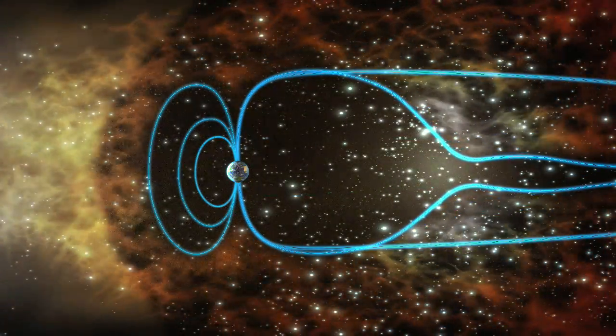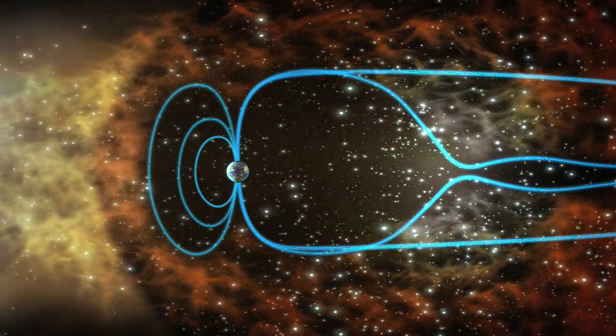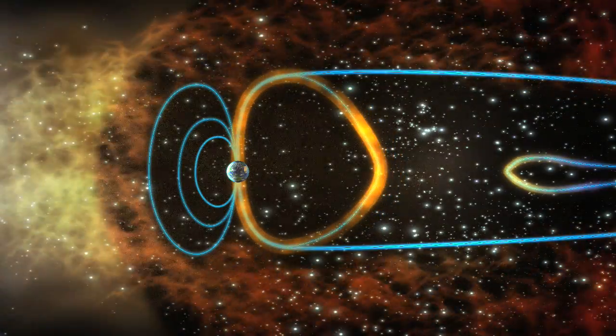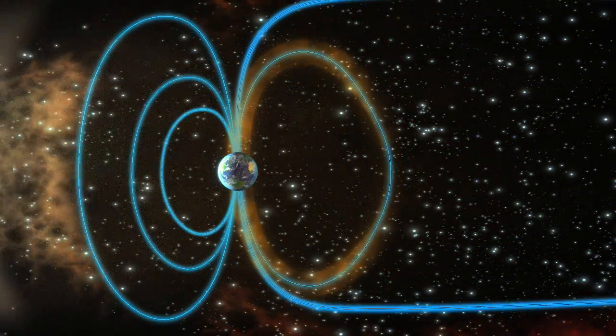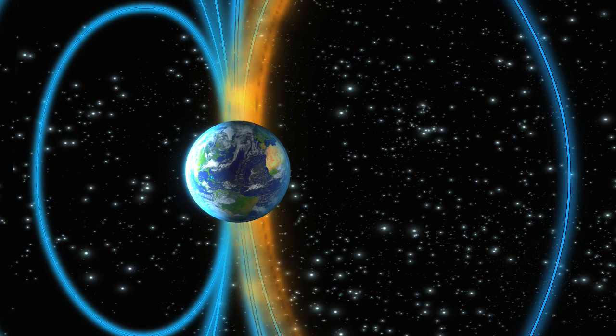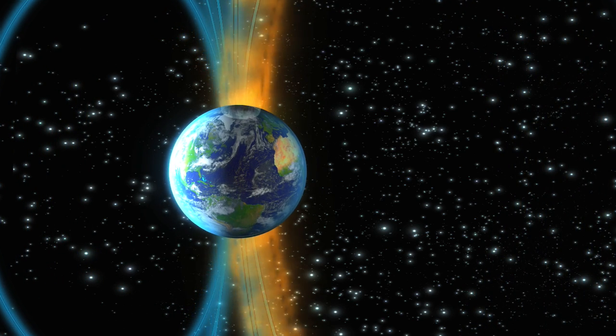There are two weak points in the Earth's magnetic defense to the solar wind. These occur near to the Earth's north and south magnetic poles. When solar wind particles leak into the magnetosphere, they spiral towards Earth along the magnetic field lines.